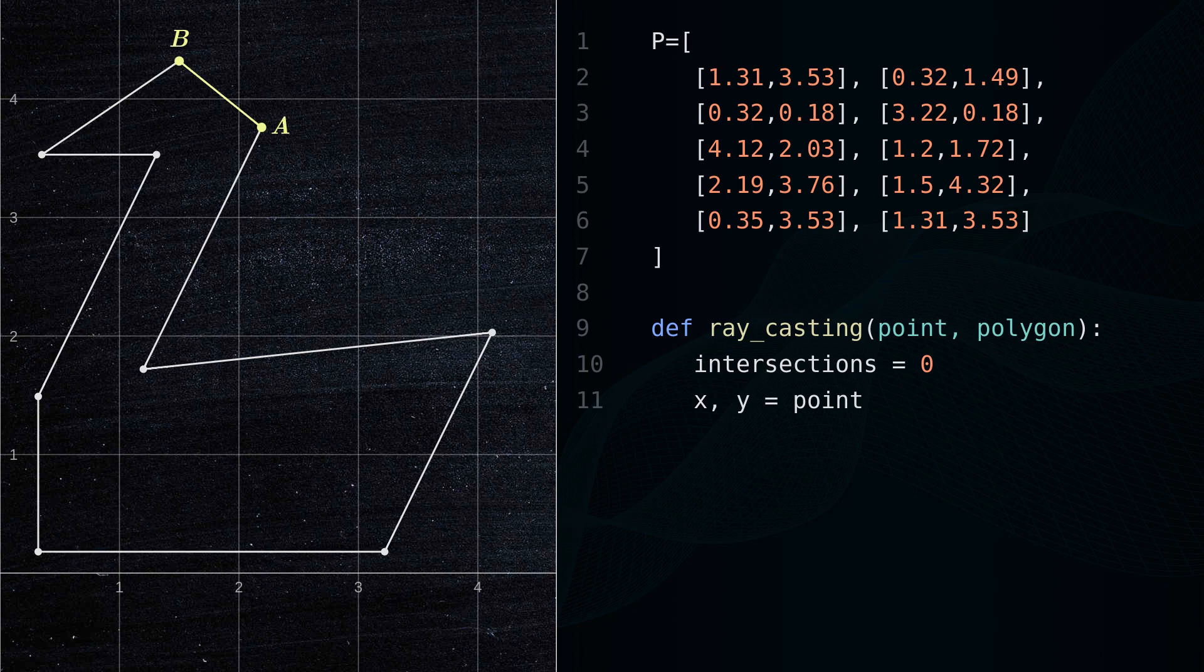For each vertex of the polygon, consider the line segment AB, where A is the current vertex and B is the next vertex.